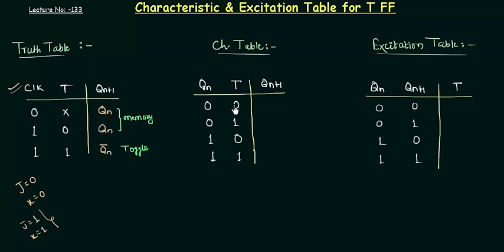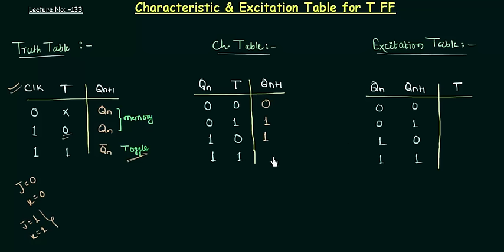From the truth table, when T is 0 it means the memory state — whatever the present state is becomes the next state. So when Qn is 0, Qn plus 1 is also 0. When T is 1 it means the toggle state, so whatever be the value of the present state it is complemented as the next state — Qn plus 1 is the complement of Qn. So when Qn is 0, the complement is 1. Similarly when T is 0 and Qn is 1, Qn plus 1 is also 1, and when T is 1 and Qn is 1, the complement of 1 is 0.